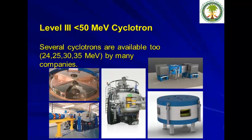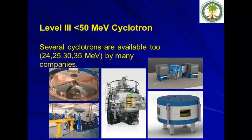Level 3 cyclotrons, less than 50 MeV, are produced by various companies with fixed energies of 24, 25, 30, and 35 MeV — manufactured by IBA, ACSI, and BEST Cyclotron. The facility plan is quite large: the cyclotron has different beam lines that can be used simultaneously for isotope production in multiple target vaults. The facility is huge, and the costs associated with these cyclotrons are also huge.